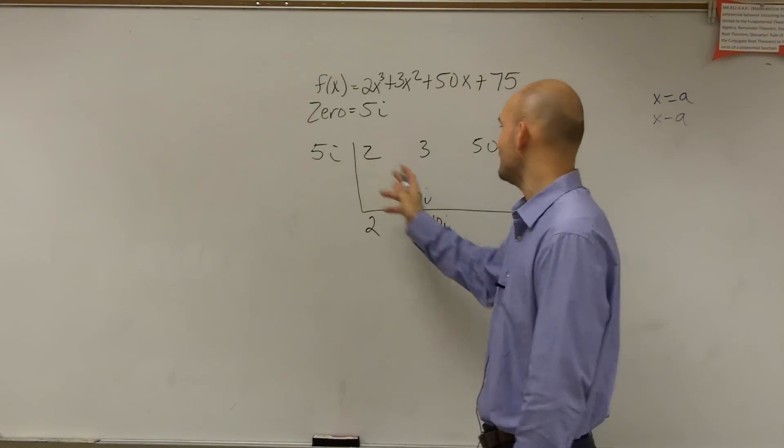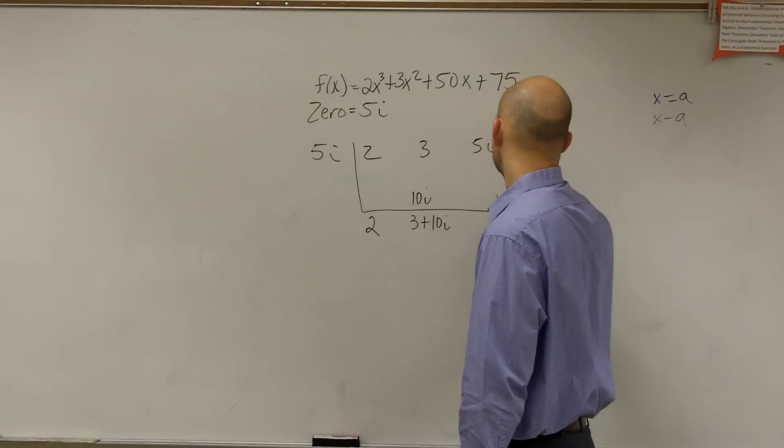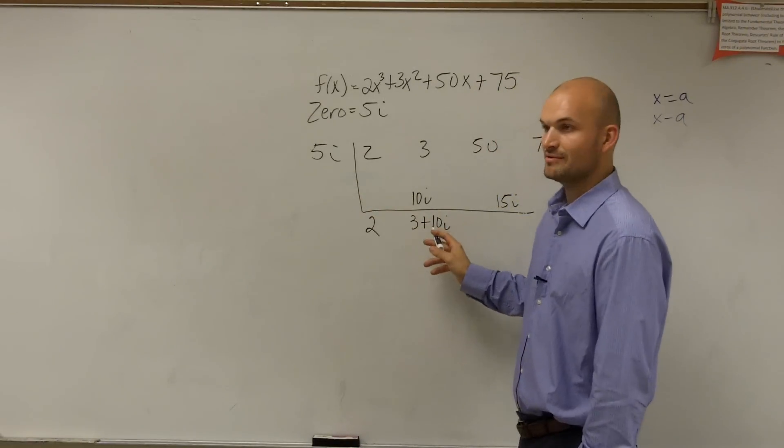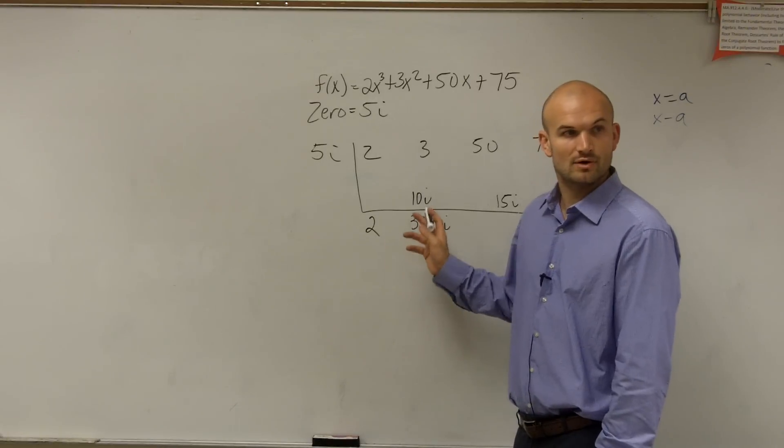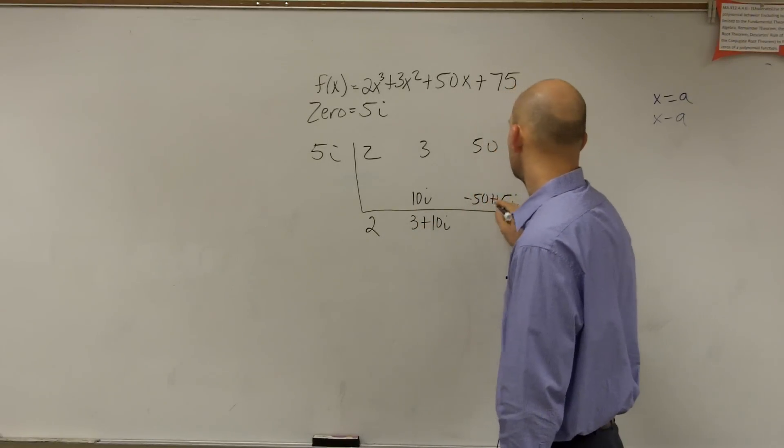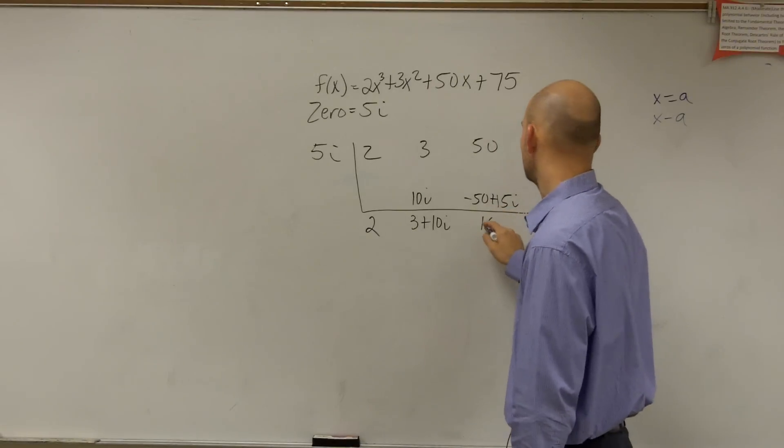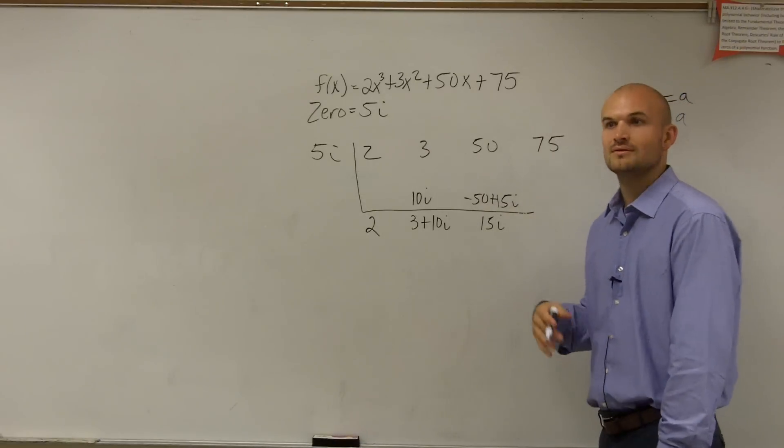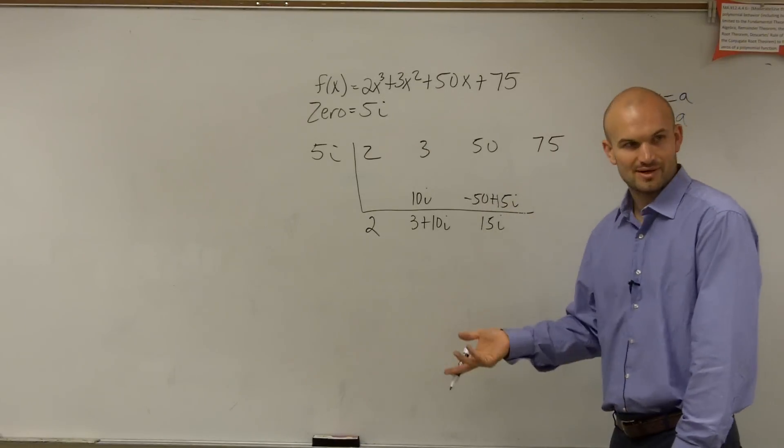Then you multiply. 5i times 3 is 15i. 5i times 10i is going to be 50i squared. i squared is negative 1. Negative 1 times 50 is negative 50. So then you get 15i. 15i times 5i is going to be 75i squared. i squared is negative 1.